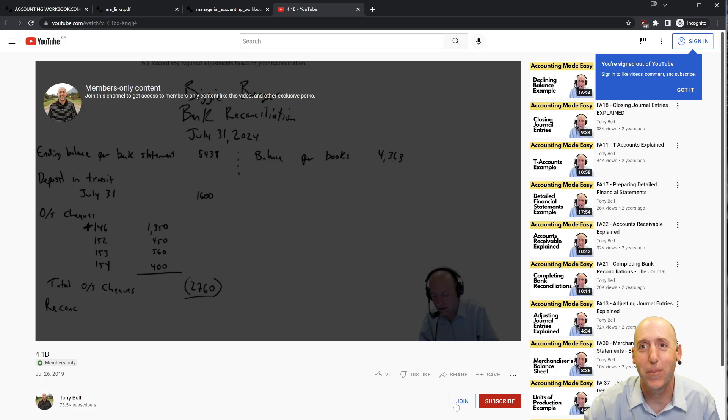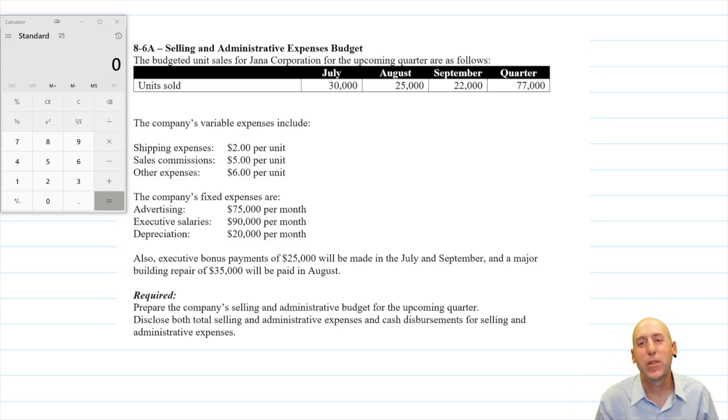Okay, let's jump into the problem. Welcome to problem 86A. This is a selling and administrative expenses budget. When I read these, I do think of them as almost a reading comprehension test. I don't think you need to be very creative to solve this one. I don't think you need to be puzzling through things in your mind. You just have to read carefully and logic your way through it because it is fairly logical, this budget. Let's read it.